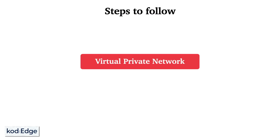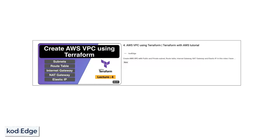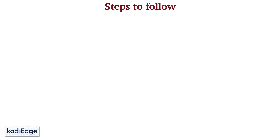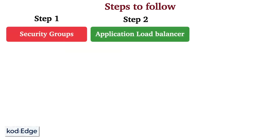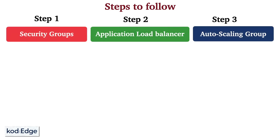For better understanding, I've created a step-by-step guide to follow along as we code in Terraform. You will need a VPC already set up in your AWS cloud — I have already created a video for how to create a VPC using Terraform and will attach its link in the description. The steps for this lecture are: Step 1 — create two security groups; Step 2 — create an Application Load Balancer with a target group and listener; Step 3 — create a launch template and Auto Scaling Group.